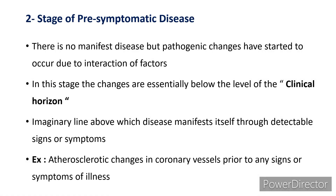Now coming to the second stage: there is no manifest disease but pathogenic changes have started to occur due to interaction of factors. In this stage, the changes are essentially below the level of the clinical horizon. The clinical horizon is an imaginary line above which disease manifests itself through detectable signs or symptoms. For example, atherosclerotic changes in coronary vessels prior to any signs or symptoms of illness — these changes begin first, and later come the signs and symptoms. This comes under the stage of pre-symptomatic.